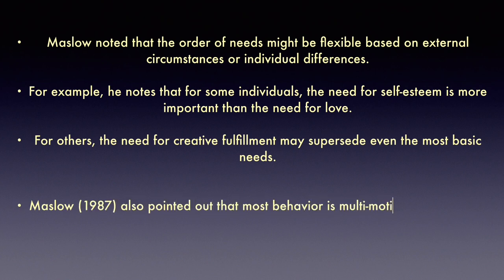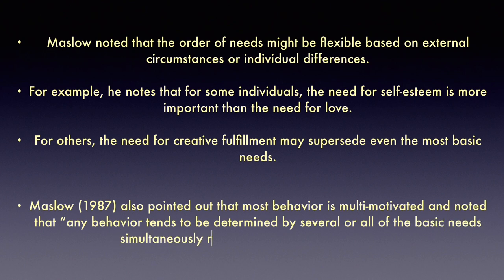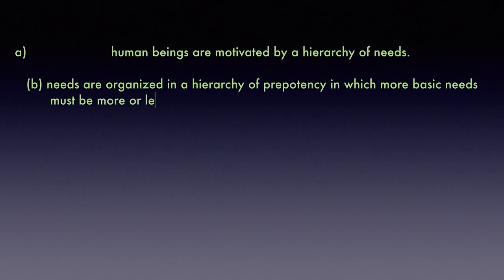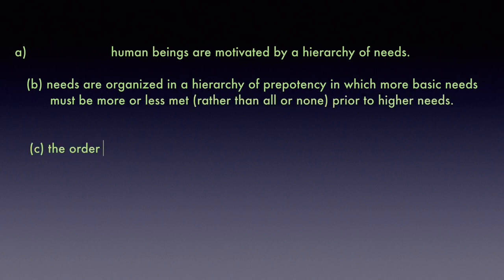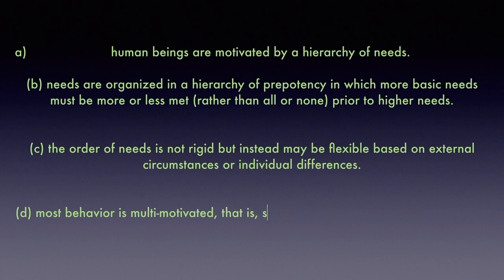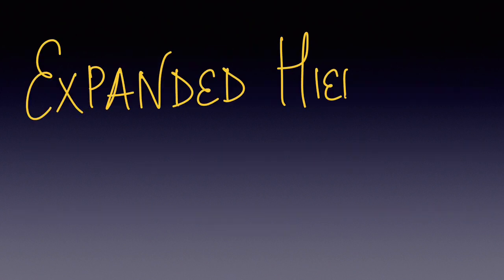Maslow also pointed out that most behavior is multi-motivated, noting that any behavior tends to be determined by several or all of the basic needs simultaneously rather than by only one. To summarize the key points: (a) human beings are motivated by a hierarchy of needs; (b) needs are organized in a hierarchy of prepotency where more basic needs must be more or less met prior to higher needs; (c) the order of needs is not rigid but may be flexible based on circumstances or individual differences; (d) most behavior is multi-motivated.